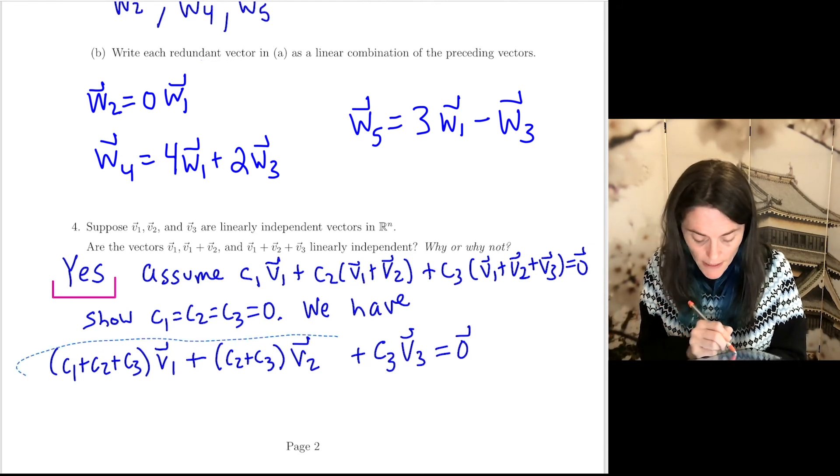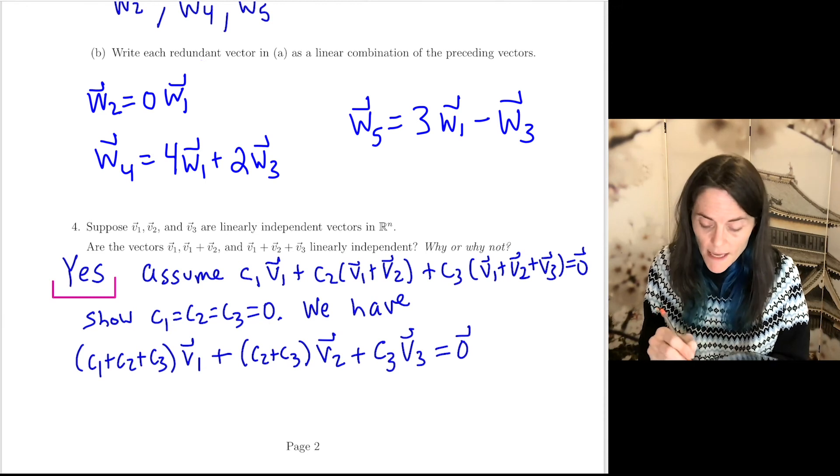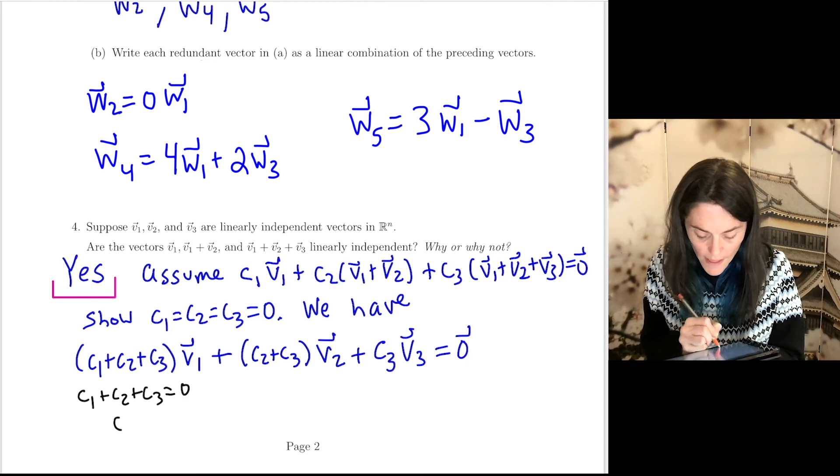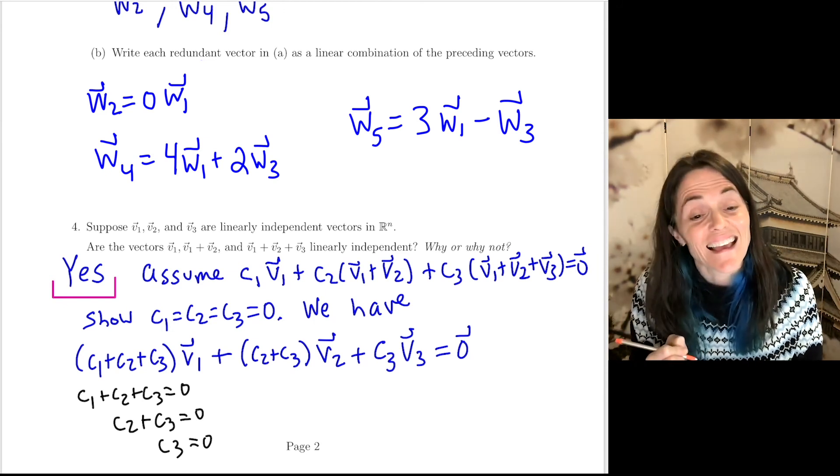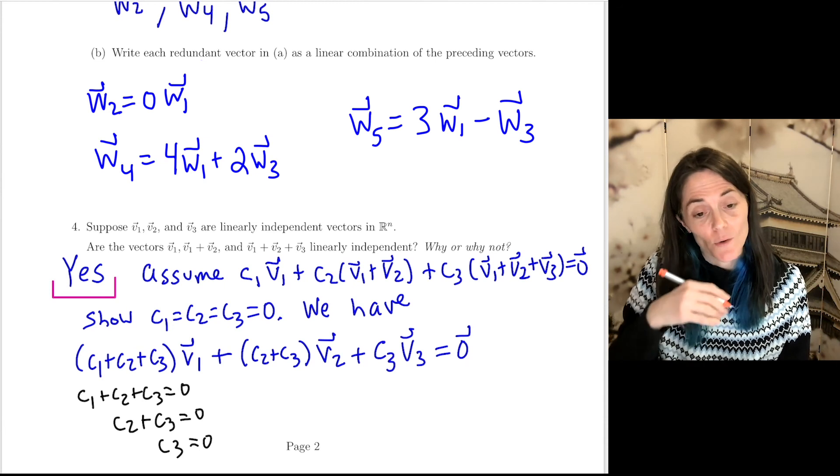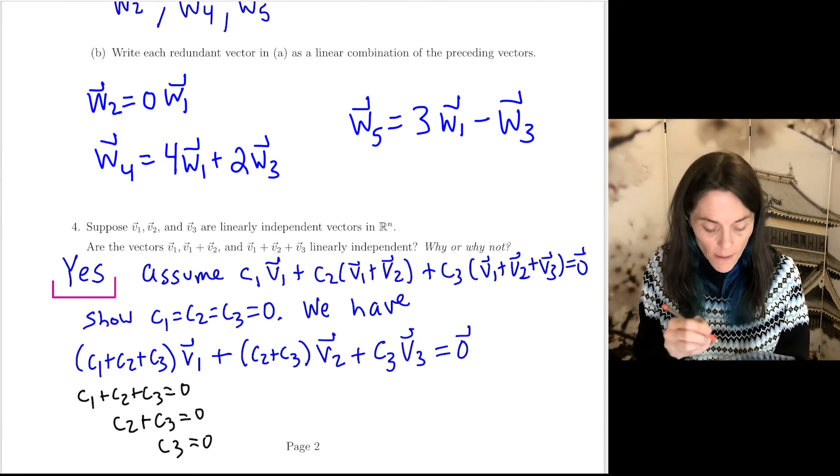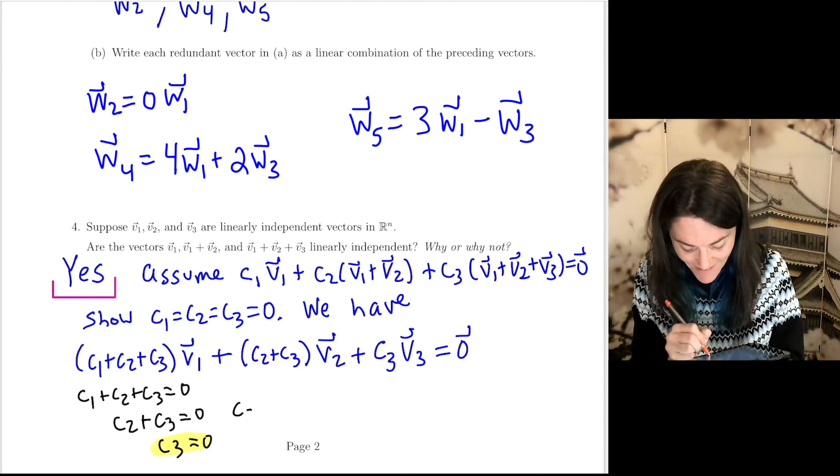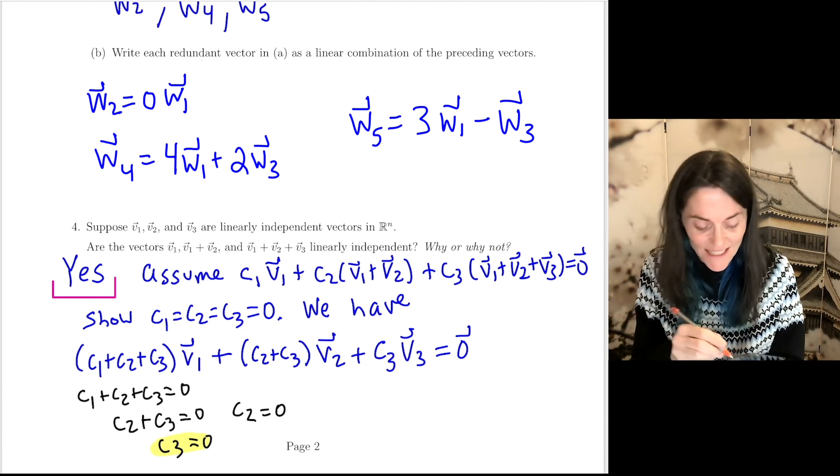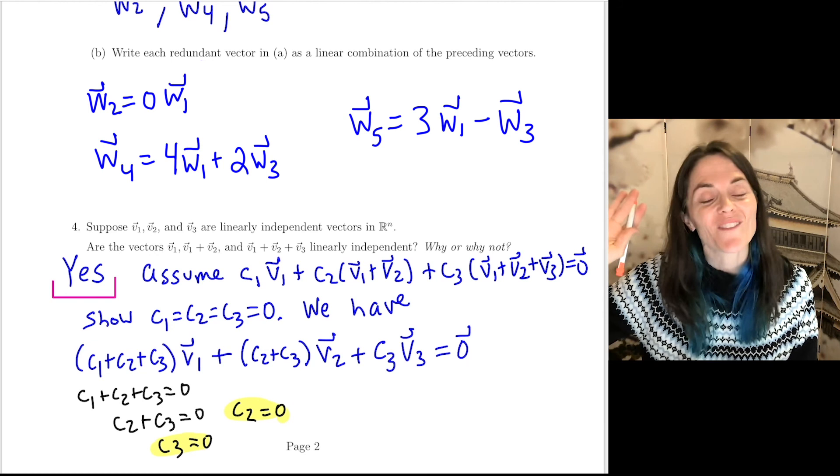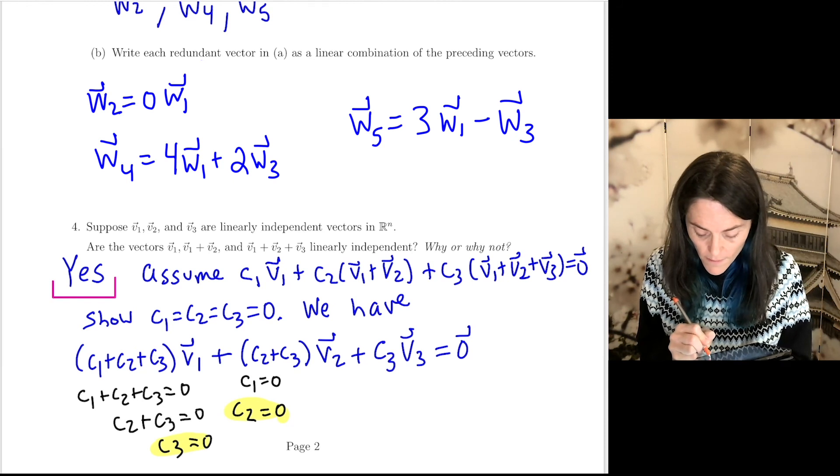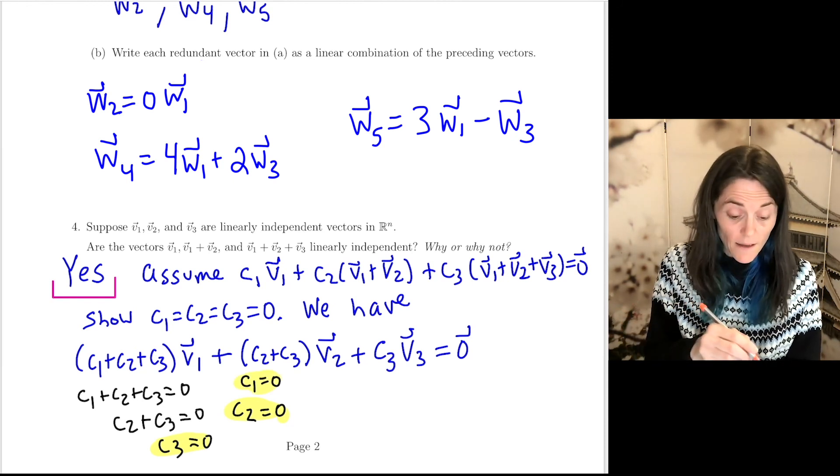These three vectors are independent. And so we must have C1 plus C2 plus C3 is 0. We must have C2 plus C3 is 0, and we must have C3 is 0. We're pretty much there because already we have C3 is 0. C3 is 0 says C2 must be 0. Now step up one more. C1 plus 0 plus 0 is 0. We have C1 is 0. And so this gives us the answer yes.